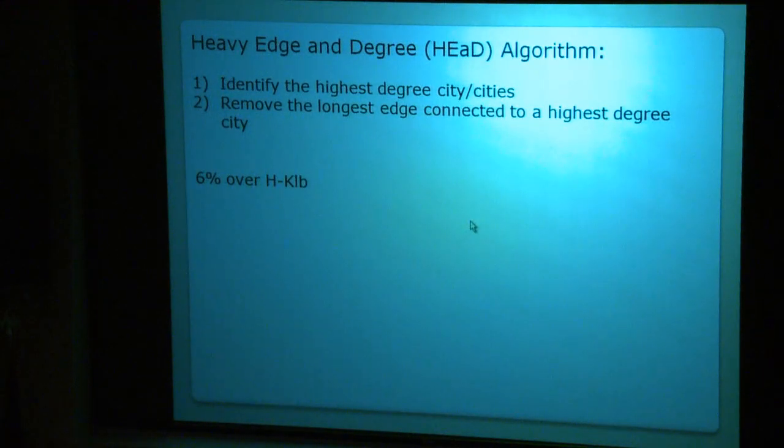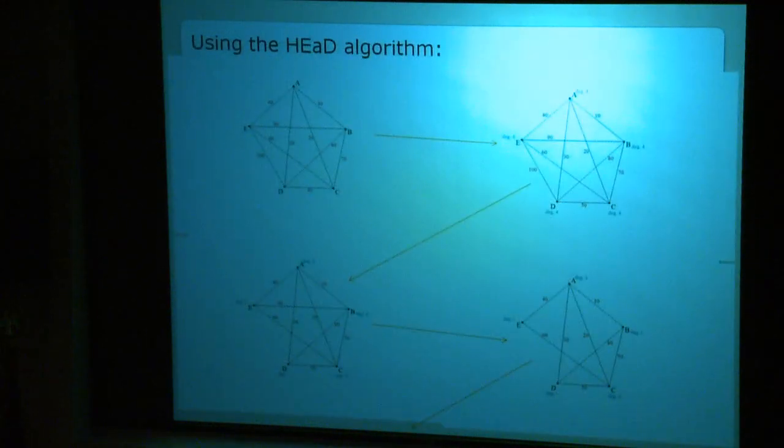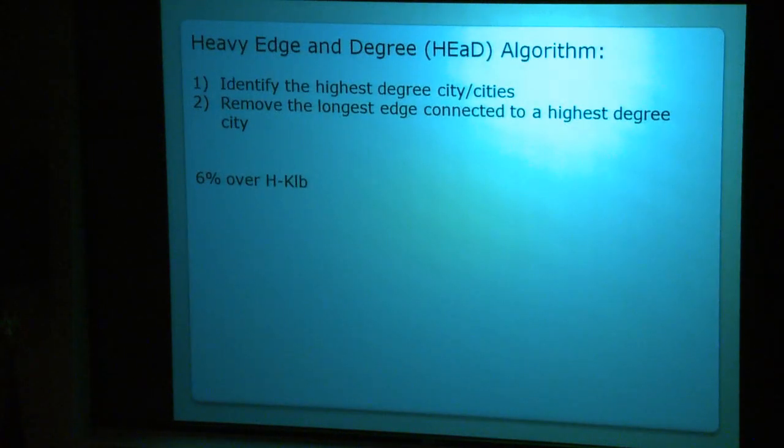And then, the Heavy Edge and Degree HEaD algorithm. This one is actually mine, and I take a completely different approach. I focus on numbers of connections to all the cities, look at the degrees, and then I choose the longest edge connected to a city that holds or shares the highest degree within the graph, and then I remove the longest connection. The estimation is, on average, by examples I tested, I'm guessing that it's on average about 6% over the lower bound.